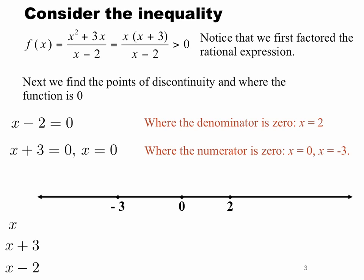So we'll start with the first factor, which is x. We know that x will be equal to 0 at 0. If we choose any values to the left of 0, then that function x would be negative. And if we choose any values to the right of 0, that function will be positive. So now we have the sign line for the factor x.